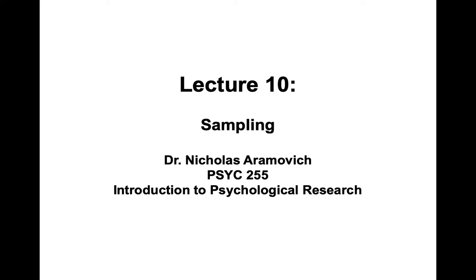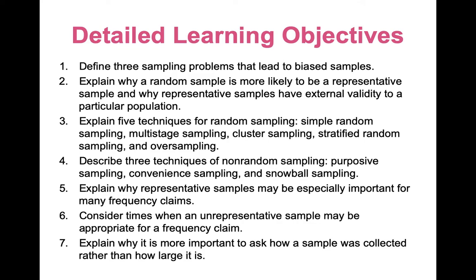This lecture is on sampling. After this lecture, you should be able to define three sampling problems that lead to biased samples, explain why a random sample is likely to be a more representative sample, and why representative samples have external validity to a particular population. You should know five techniques for random sampling and also three techniques for non-random sampling.